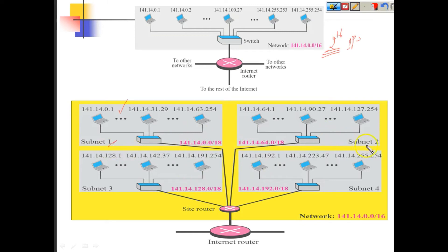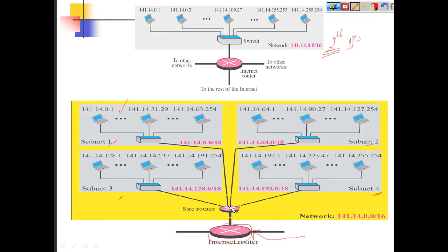This gives us subnet one, subnet two, subnet three, and subnet four. Whenever you want to do subnetting within your organization, we need a router that can take care of individual subnets. Whatever comes to this block will be handled by the external router, and the packet will be forwarded to the internal router, which then forwards it to the individual subnet.